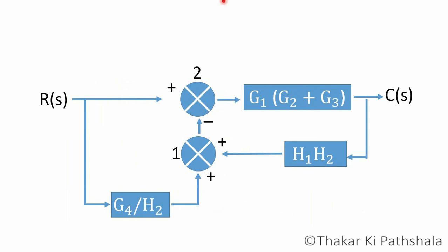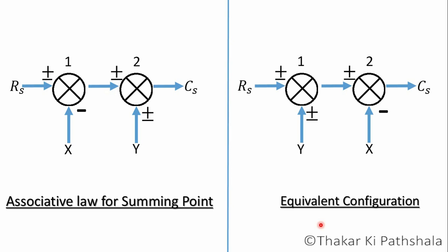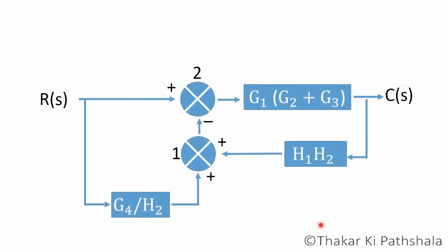Now we cannot apply any rule directly. So to get a proper configuration which we can reduce by applying rules, we will rearrange the summing point by rule number four, which tells that we can interchange the input of summing point coming after one another. For this situation, we will move this summing point number one to here.